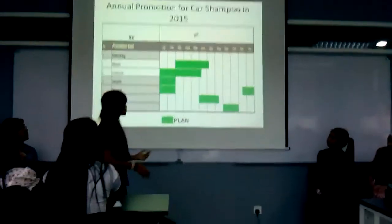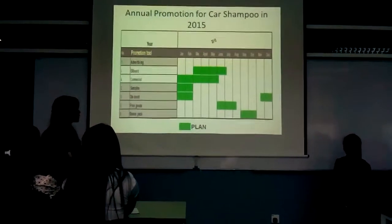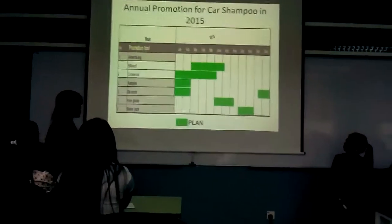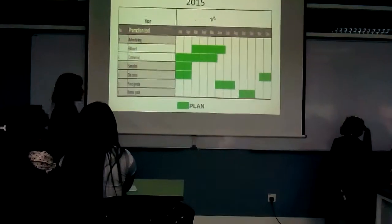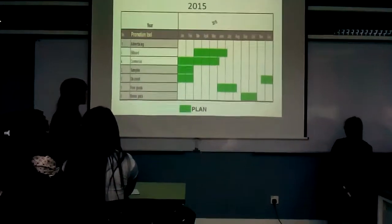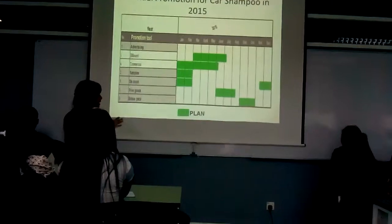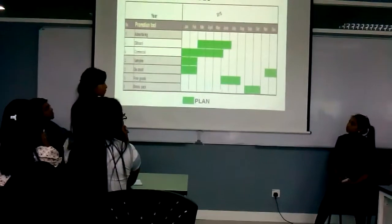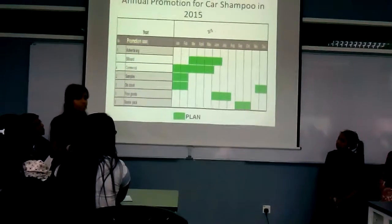We use a Gantt chart to show the annual promotion plan. We use five types of promotion tools: advertising, samples, discounts, free goods, and bonus packs. We use two types of advertising: billboard advertising and commercial advertising. For commercial advertising, we plan to run it from January until the beginning of June, to generate consumer awareness towards the product in a shorter period. Consumers prefer advertised goods, and commercial advertising includes TV and radio since most people watch television daily.